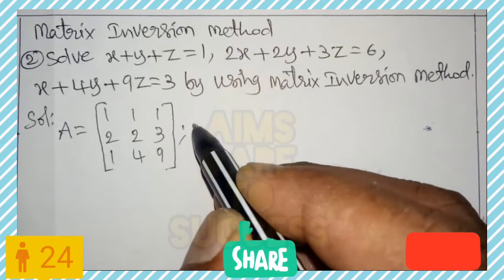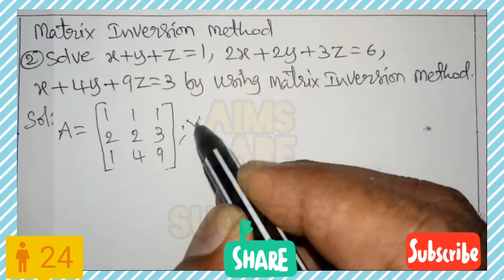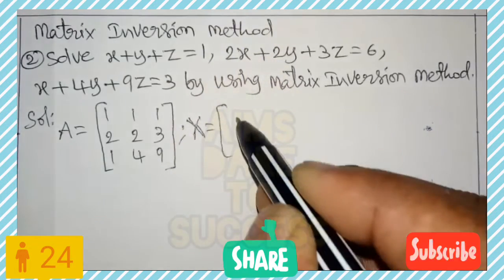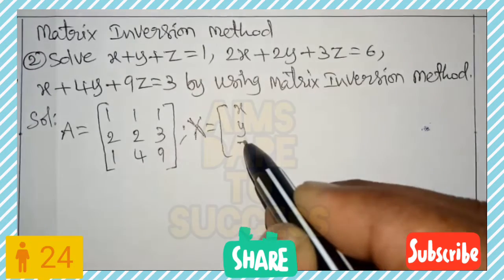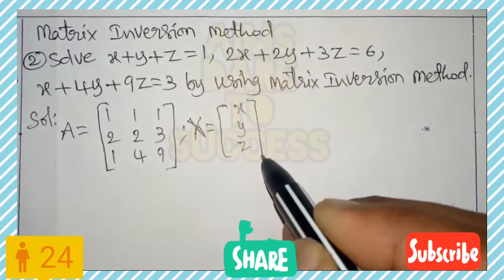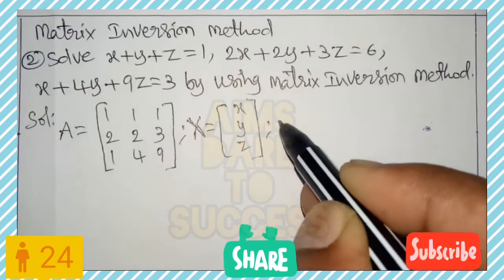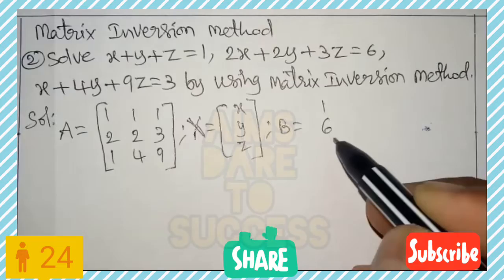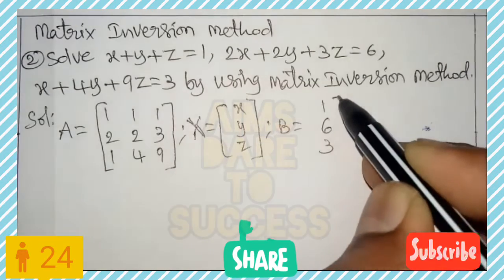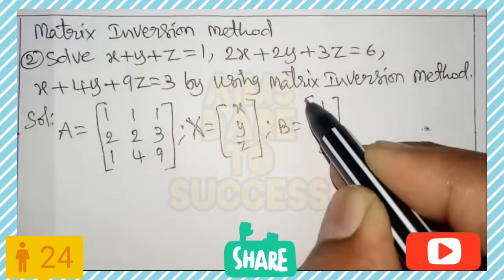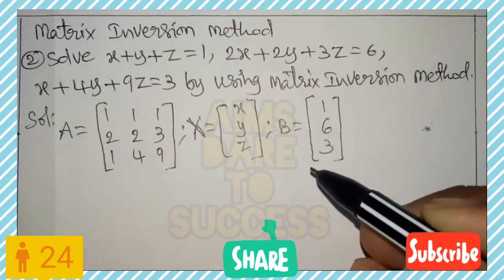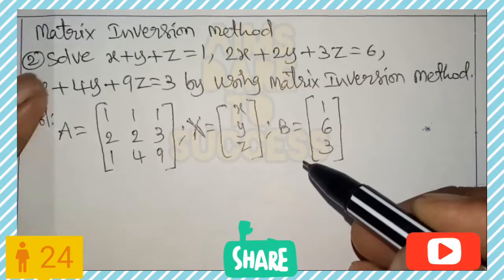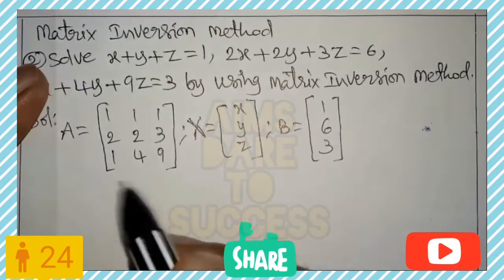Row 3 of matrix A is 1 4 9 — those are the x, y, z coefficients. Matrix X is a column vector of x, y, z. Matrix B contains the constant terms from the right side of the three equations: B = [1, 6, 3]. The matrix inversion method is very important and easy because I am explaining it using a shortcut method.